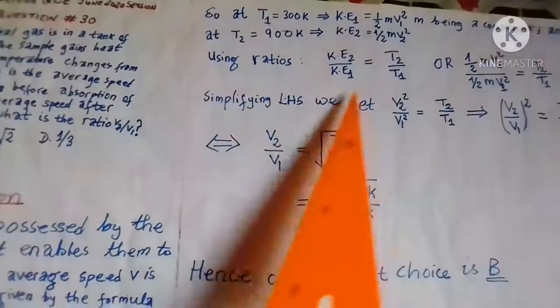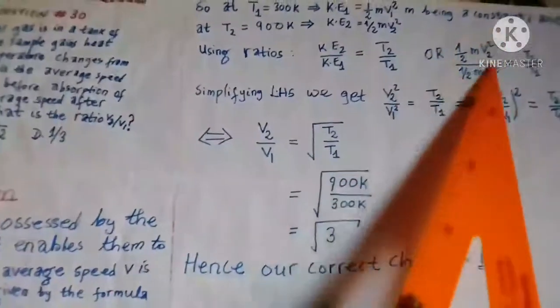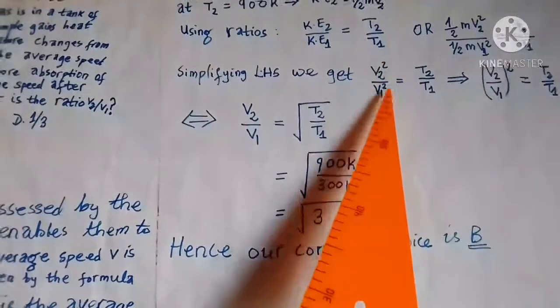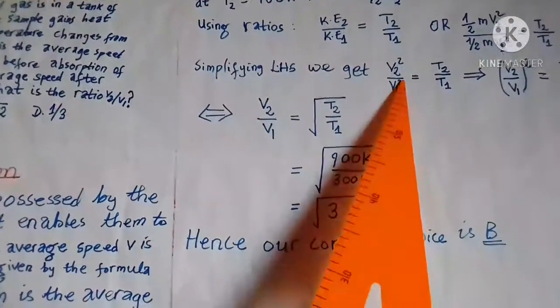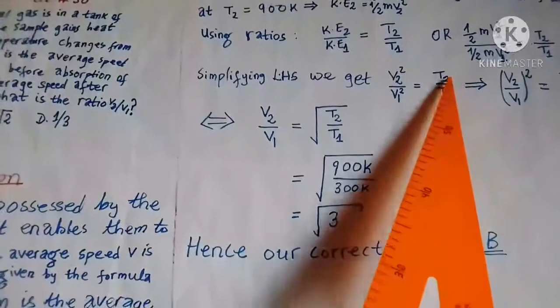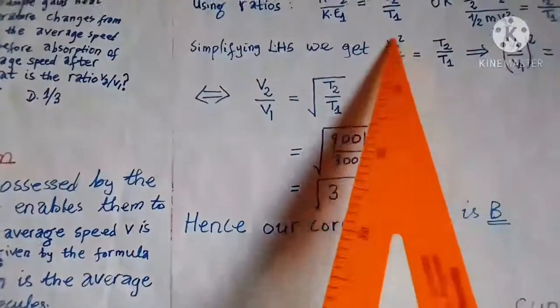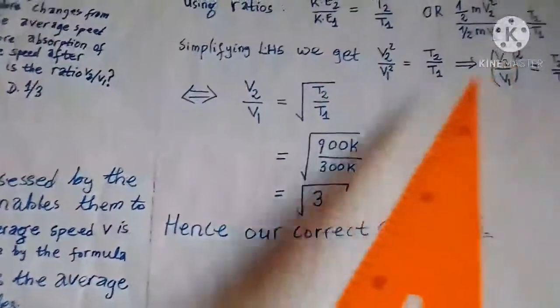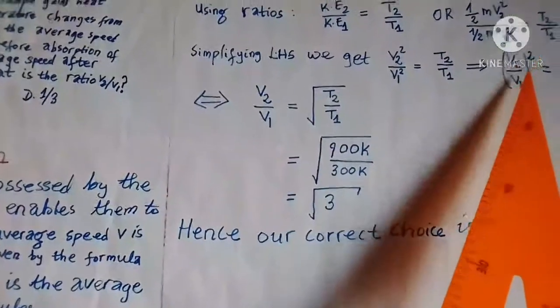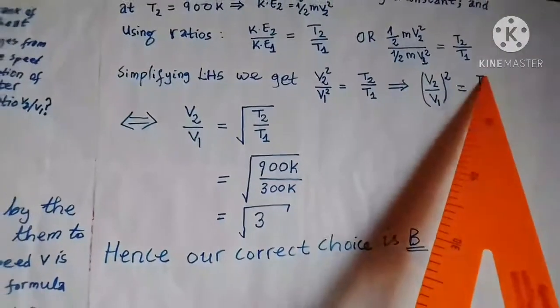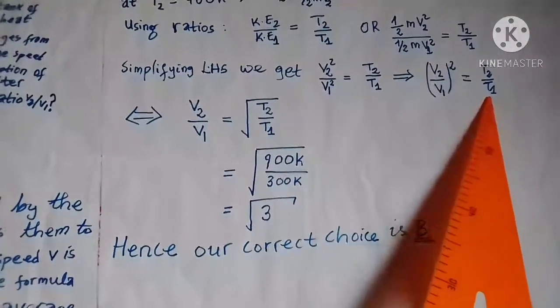If we simplify the left hand side, we get V2²/V1² to be equal to T2/T1. We know that by indices this is the same as (V2/V1)² and this is equal to T2/T1.